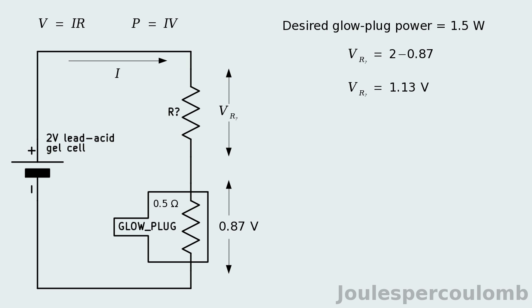We now have enough information to calculate the current by dividing the voltage across the glow plug by its resistance. Finally, the necessary resistance of R can be found.